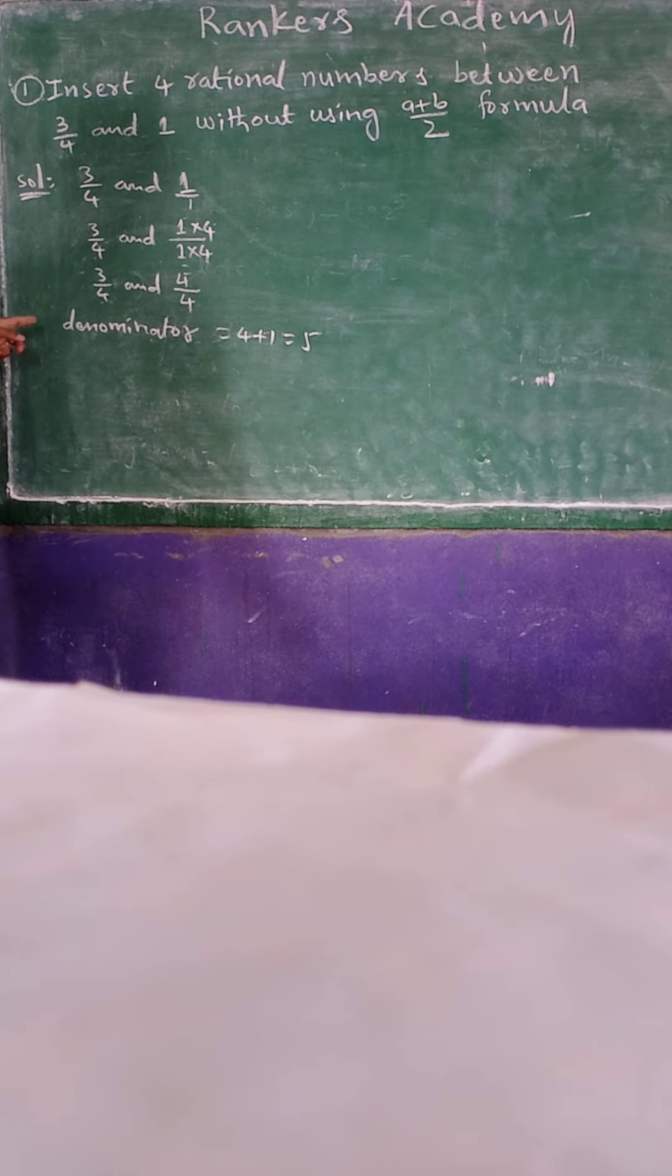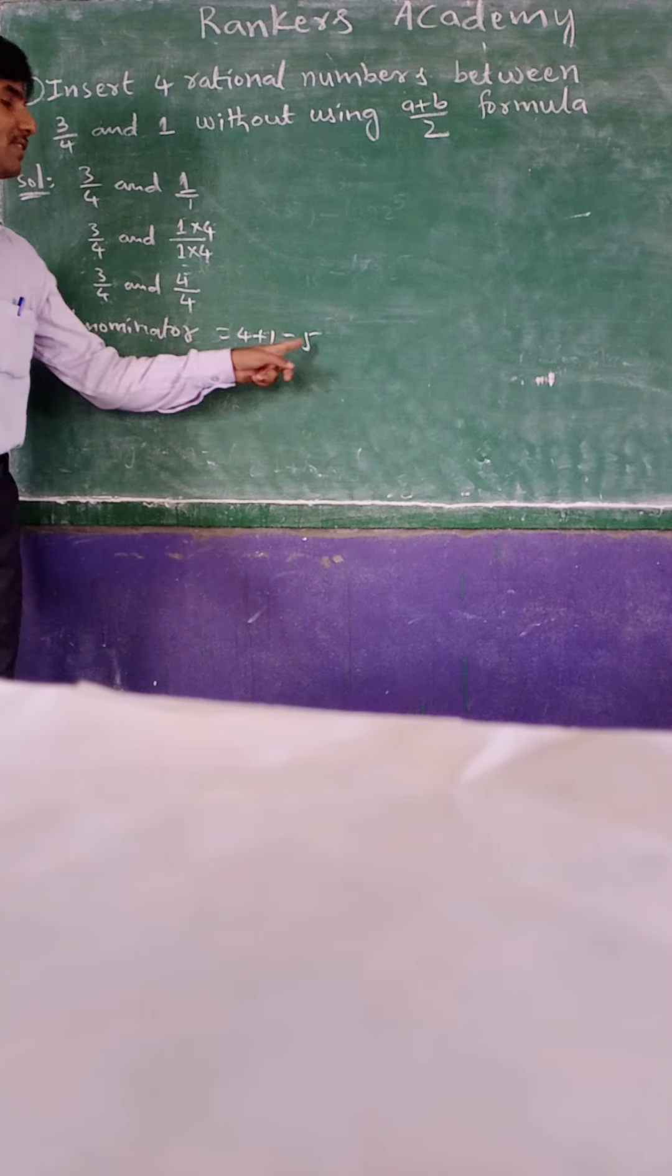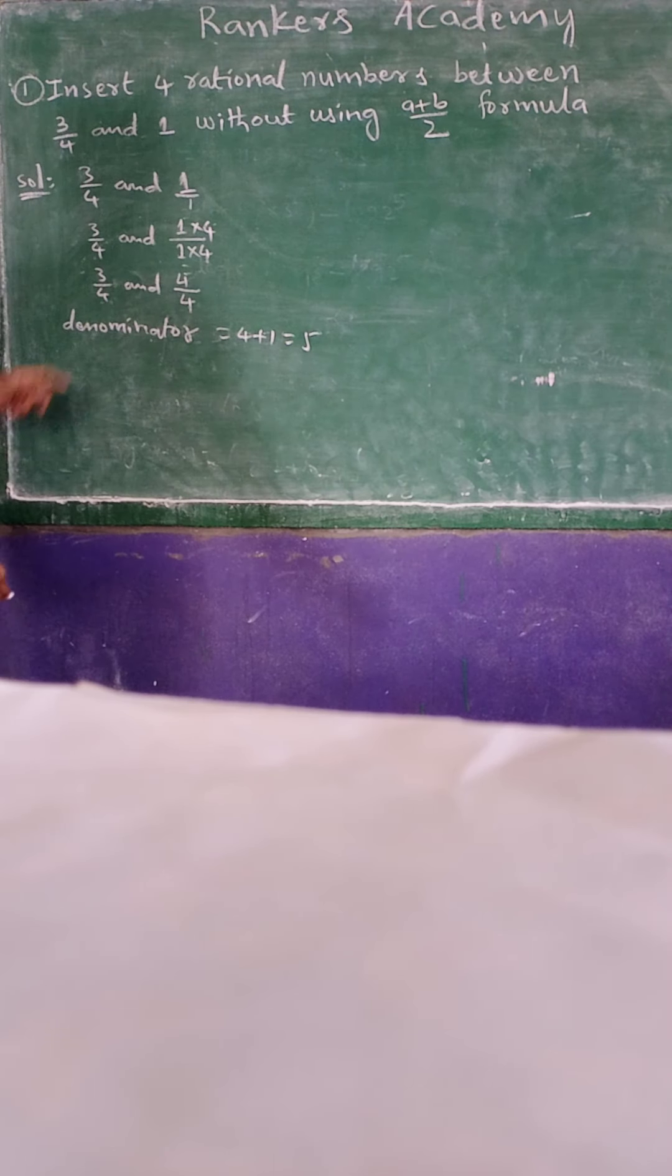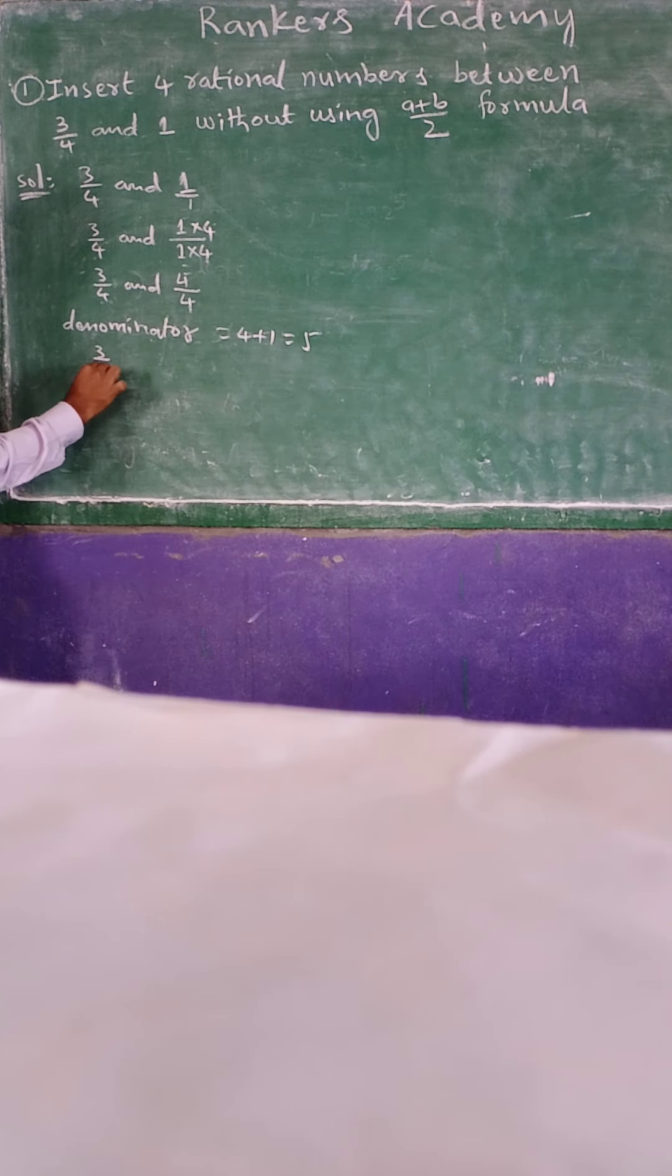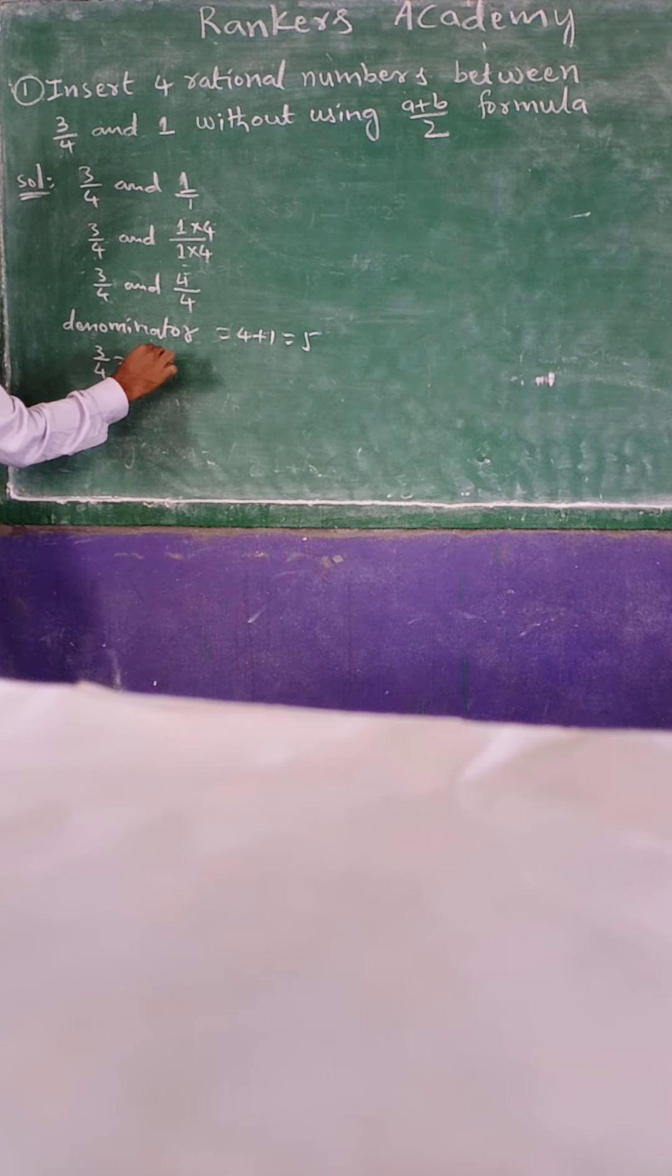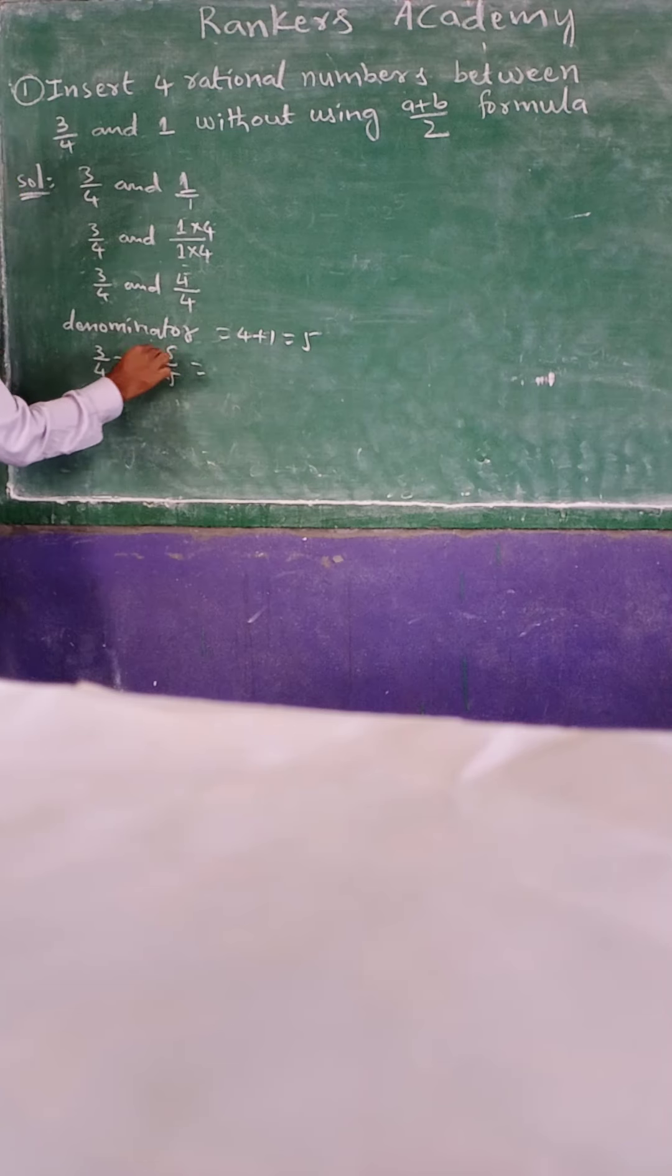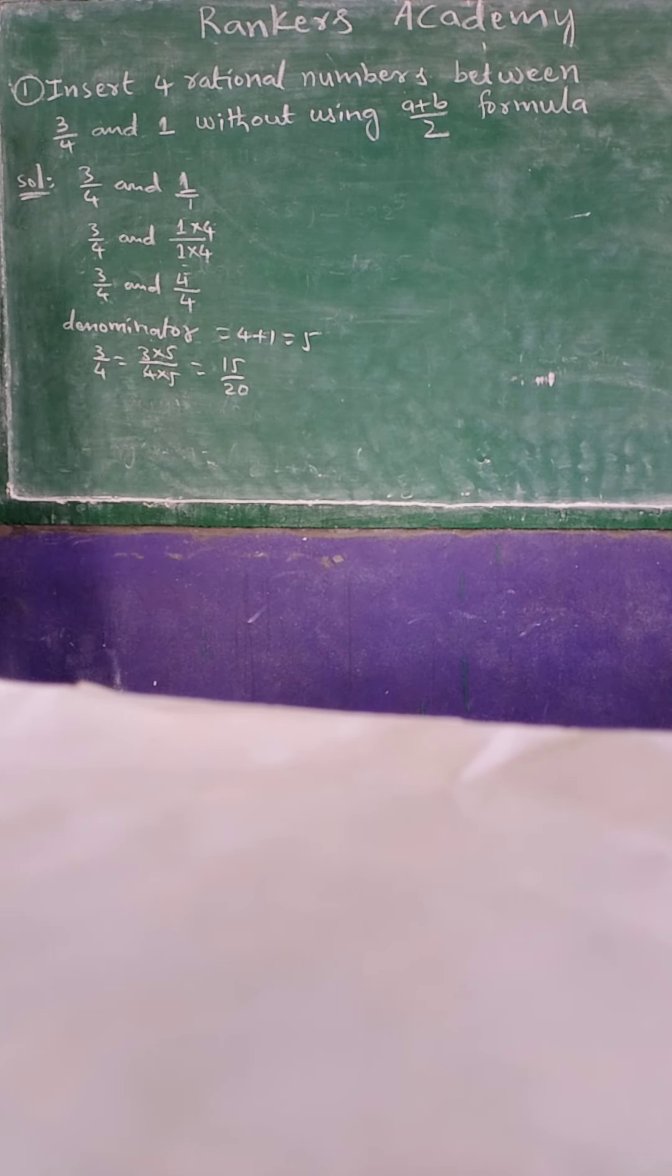Now we have to multiply and divide the denominators with the 5. So take it here. 3/4 equal to. 3/4 into 5 into 5.